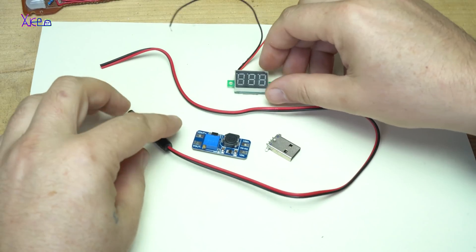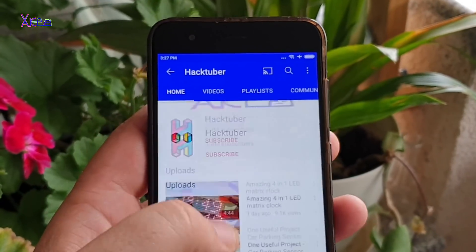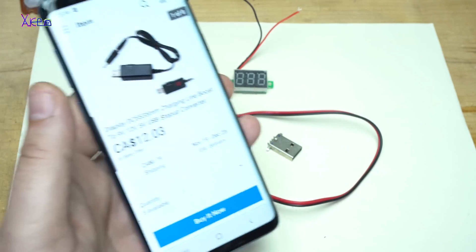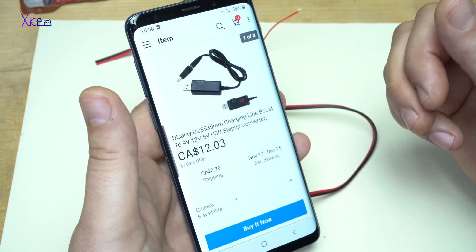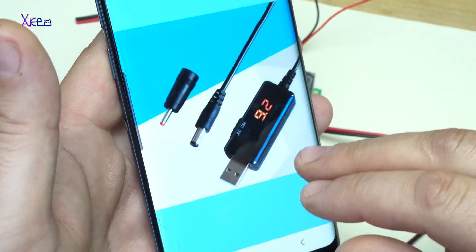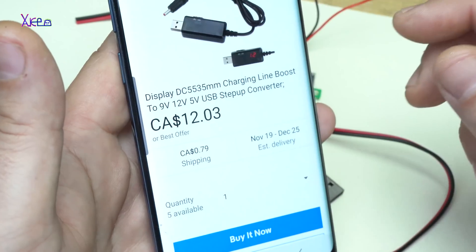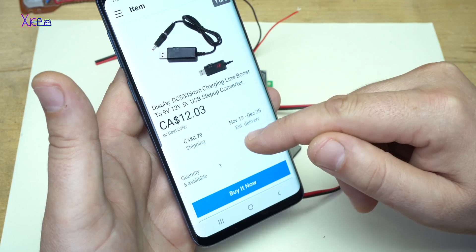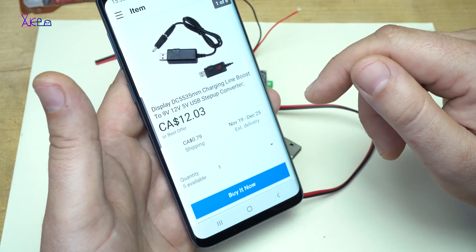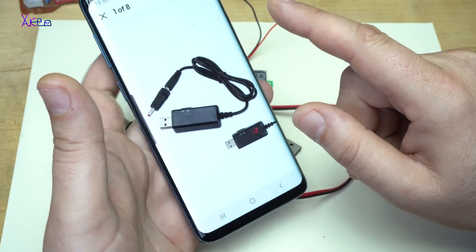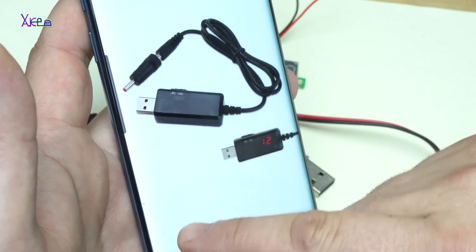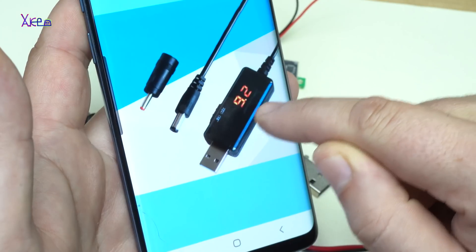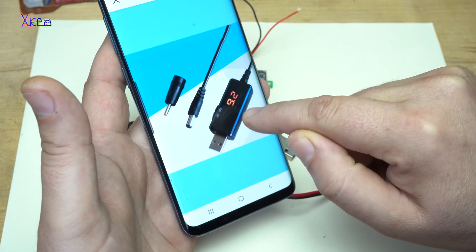Hello Hacktubers and welcome back to my channel. Subscribe to my channel and watch hundreds of DIY videos. Look what I found on eBay - it's a charging line boost to 9V, 12V, 5V USB step-up converter. This device you can plug into USB, it shows with this tiny voltmeter how much the output voltage will be.